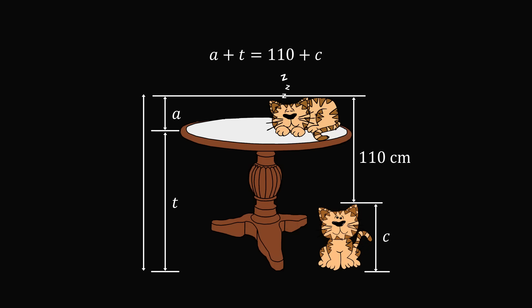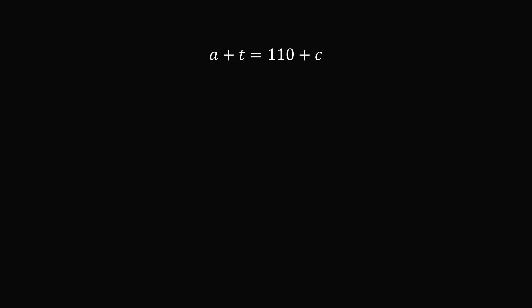Let's put the two equations together. We have three variables — c, a, and t — but only two equations. In general we can't solve for each variable individually. But in this problem we don't need all three; we only need t, the height of the table. So let's find a way to cancel out the other variables. The trick is to add the two equations together.